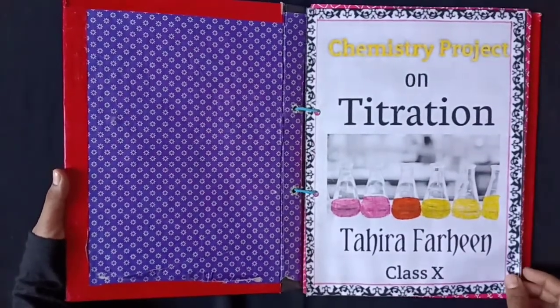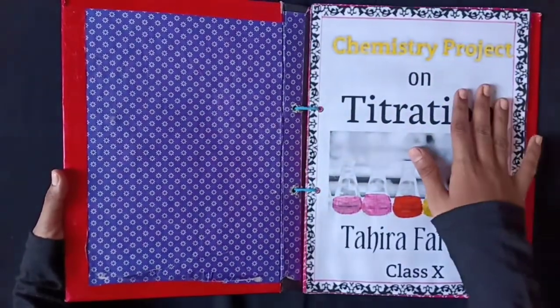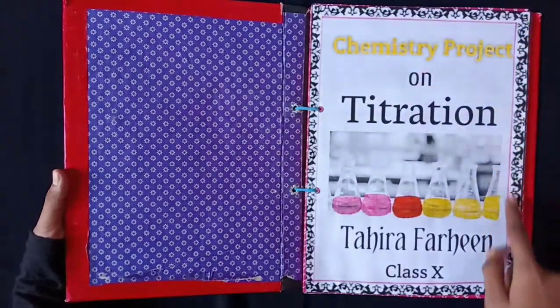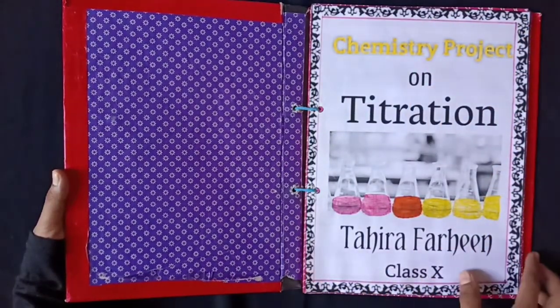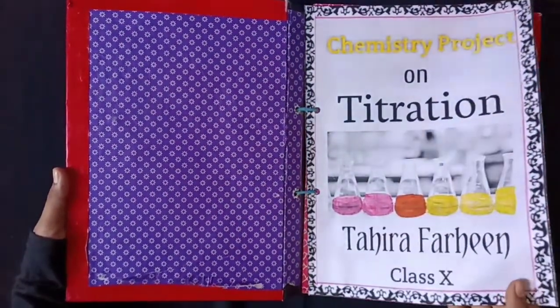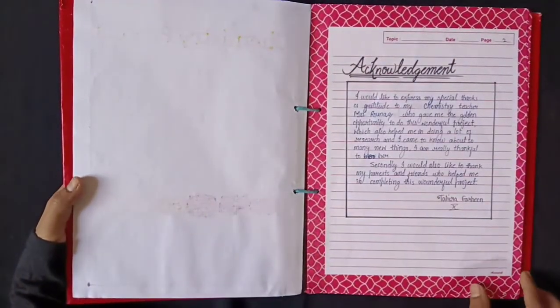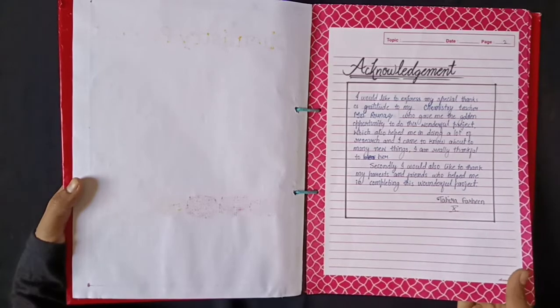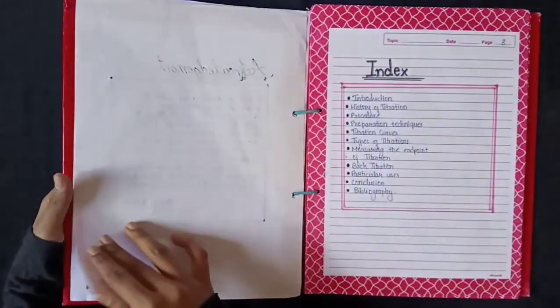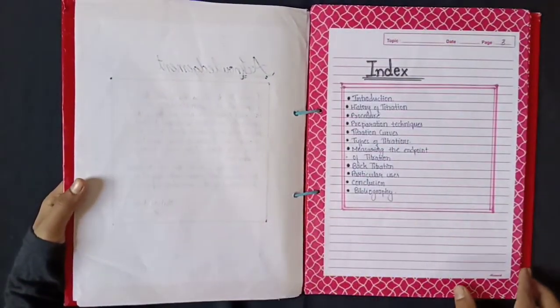I have taken it spiral bound. I have written 'Chemistry Project.' I have decorated it and surrounded it with some borders. Next is acknowledgement. Hope you guys can see what things are written over here. Next is index.